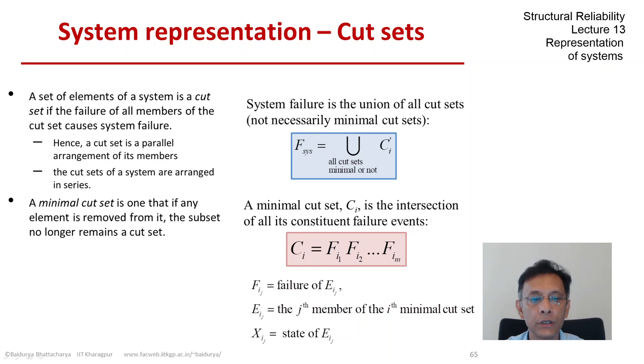So they are all arranged in parallel, and if we want to work with them further, we can associate the state of the element eij for each member of cut set i.